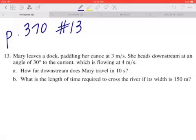Hi everyone, let's take a look at number 13 on page 370. Mary leaves the dock, paddling her canoe at 3 meters per second. She heads downstream at an angle of 30 degrees to the current, which is flowing at 4 meters per second.